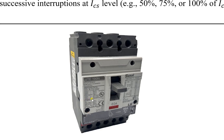Looking at another circuit breaker labeled IEC 60947-2 for industrial applications, you can see the ICU value depends on the voltage level: for example, 65 kilo-ampere at one voltage range and 35 kilo-ampere at another. Notably, the service breaking capacity ICS is 100% of ICU in this case, which means this breaker is designed to interrupt the full ICU fault current several times.